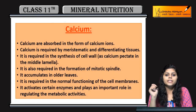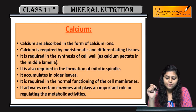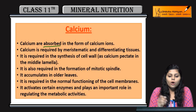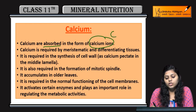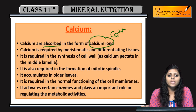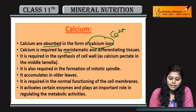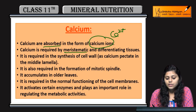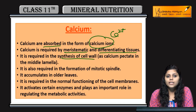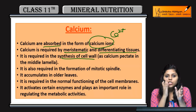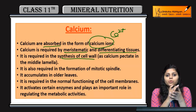Coming to the next element, that is calcium. Calcium is absorbed in the form of calcium ions. Meristematic tissues and differentiating tissues require calcium ions. Synthesis of cell walls also requires calcium ions.